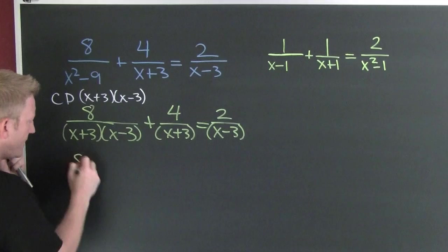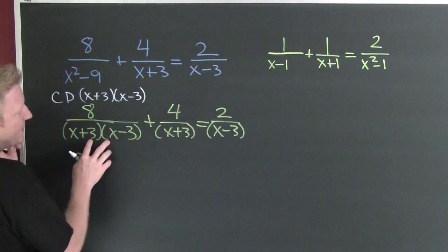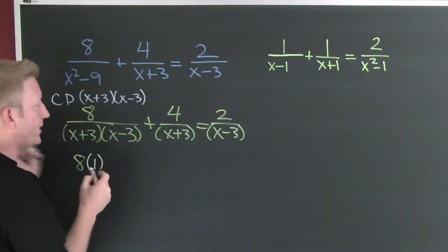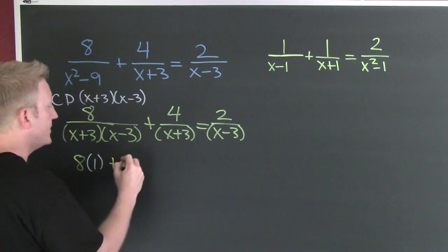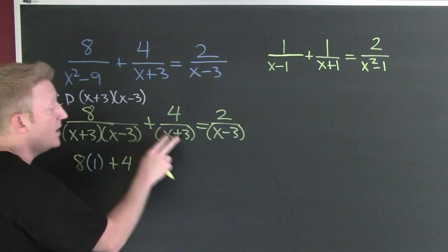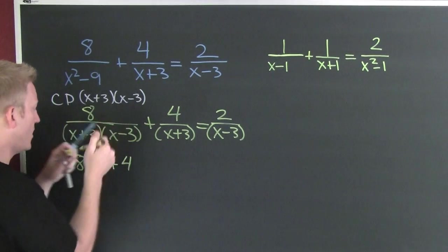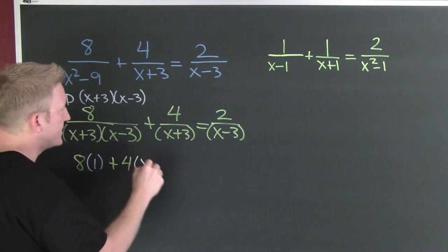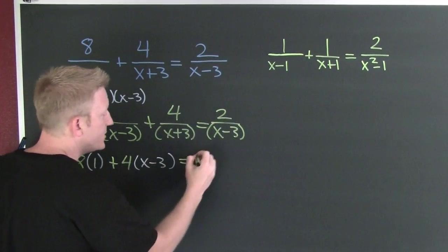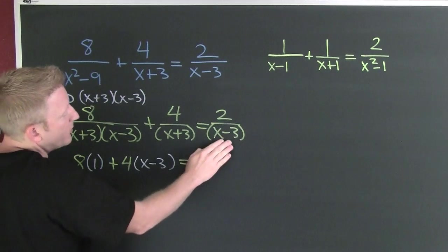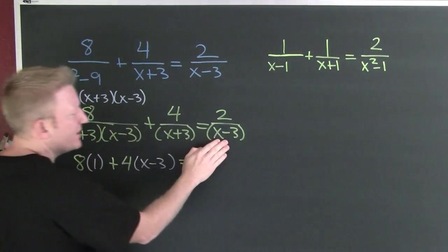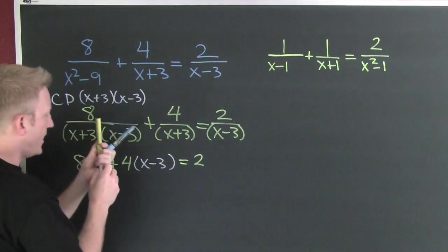What you do is you take this numerator, eight, and you multiply it by what its denominator is missing that the common denominator has. It's not missing a thing, so I just put one. Plus this numerator — I'm going to multiply it by what its denominator is missing that the common denominator has. It appears it's missing that factor of X minus three. And it's going to be equal to this numerator, two, and we're going to multiply that by what its denominator is missing that the common denominator has — that factor of X plus three.